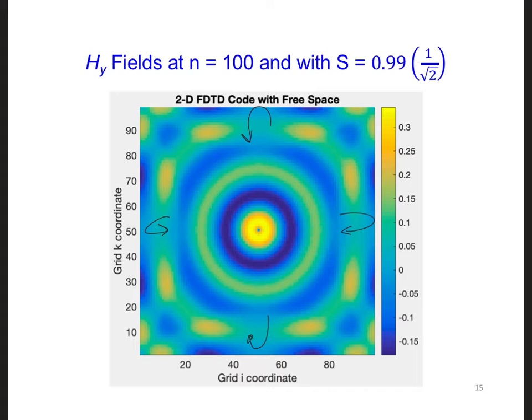Here's a snapshot of the HY fields from my code after 100 time steps. Now we're not quite done yet, because if we had to lower delta T in order to maintain stability, we should consider if there are any issues we should be aware of after converting our code from 1D to 2D.